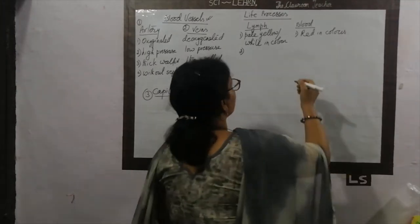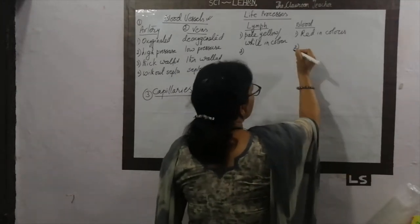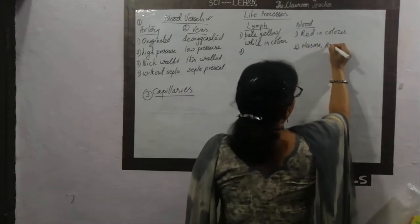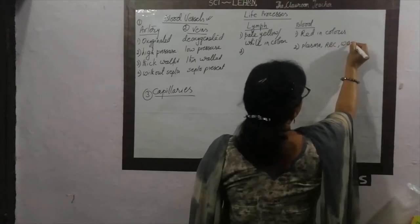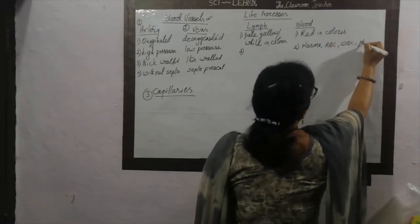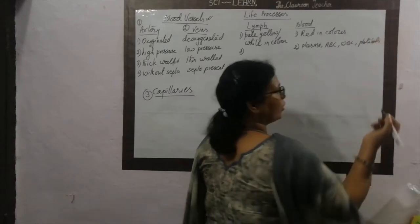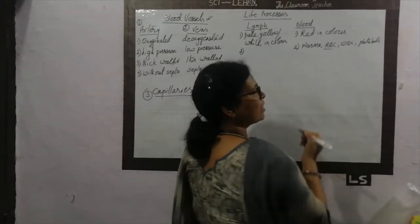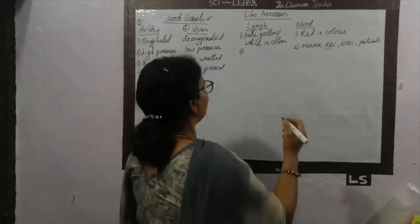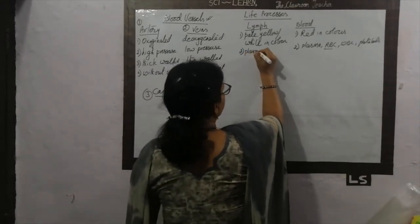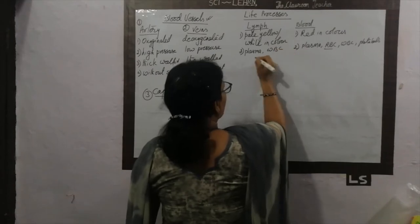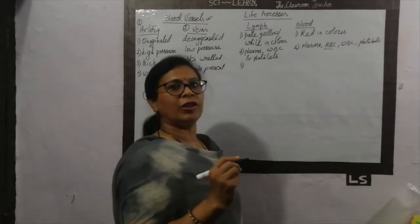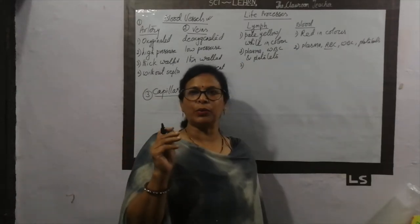The second difference is composition. We know the composition of blood: blood contains plasma and RBC. But in lymph, one substance is missing, and that substance is RBC. So lymph contains plasma, WBC, and platelets. RBC is absent in lymph — that is the second difference between the two.